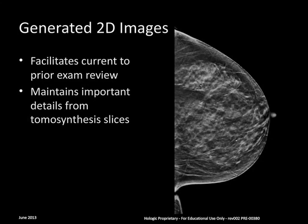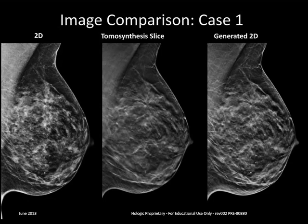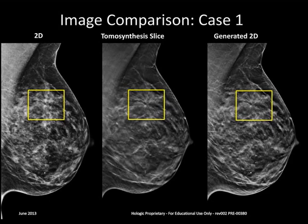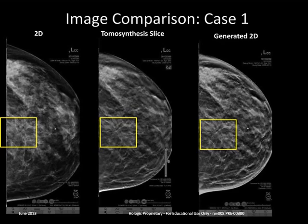The 2D images generated by the C-View software preserve important details from the reconstructed tomosynthesis slices. In the first case, a 51-year-old woman presented for routine screening mammography. The 2D MLO mammogram shown on the far left is essentially negative. The 3D tomosynthesis slice in the middle reveals an architectural distortion highly suspicious for cancer. The C-View 2D image also reveals the architectural distortion because it preserves detail from the individual tomosynthesis slices. The CC projections from the same study show the conventional 2D on the far left, then the tomosynthesis slice, and to the far right the synthesized 2D image, with yellow boxes highlighting the location of the suspicious area.